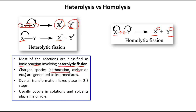In ionic reactions, if a carbon atom carries a negative or positive charge, it is called a carbanion or carbocation. These transformations usually occur within two to three steps, typically in solution, where solvents play a major role in the reaction.